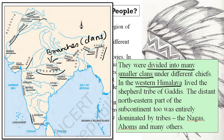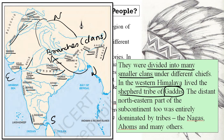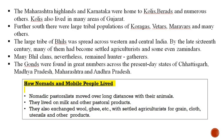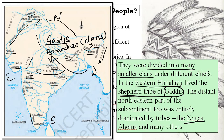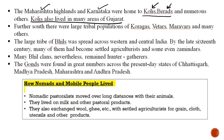In the western Himalayas lived the shepherd tribe of Gaddis. Then there were Nagas and Ahoms in the northeast region. The Maharashtra highlands and Karnataka were home to Kohlis and Berats. Kohlis also lived in many parts of Gujarat. So Kohlis are found in Maharashtra and Gujarat, while Berats belong to the Karnataka region — remember this for prelims.